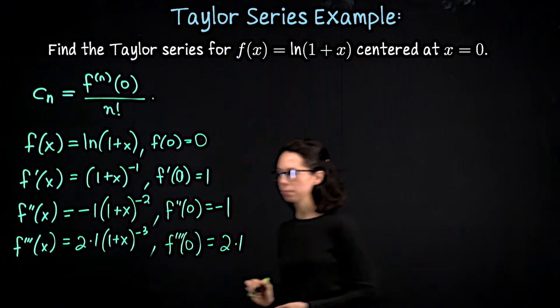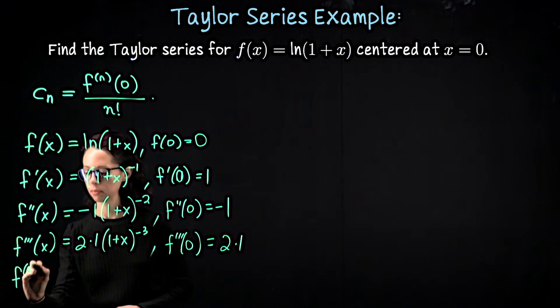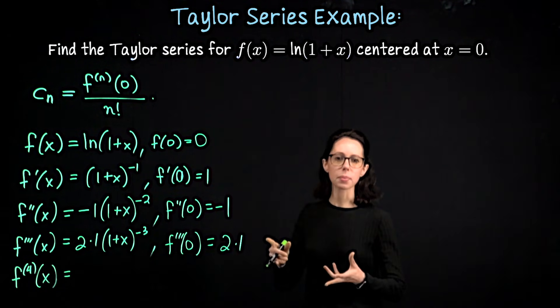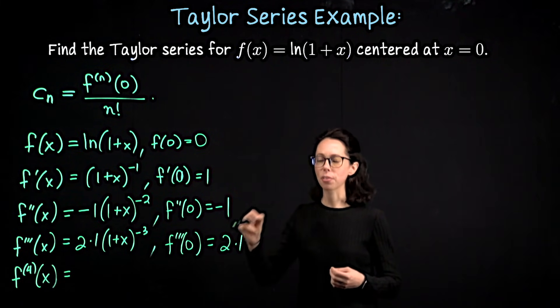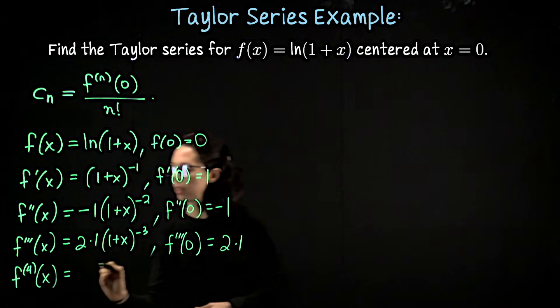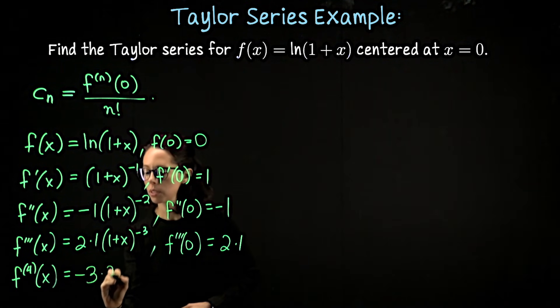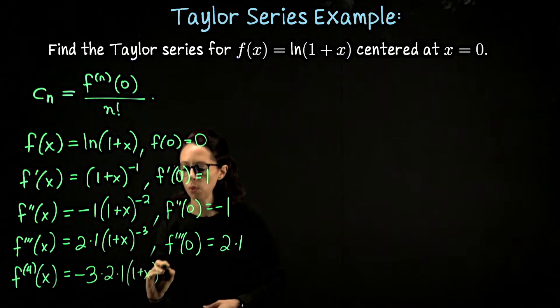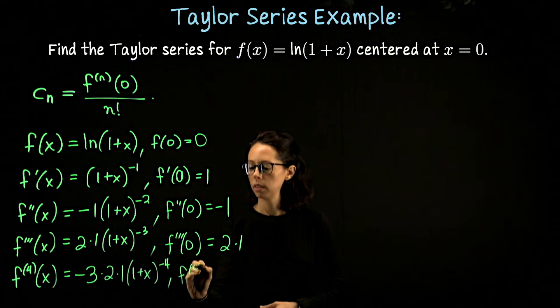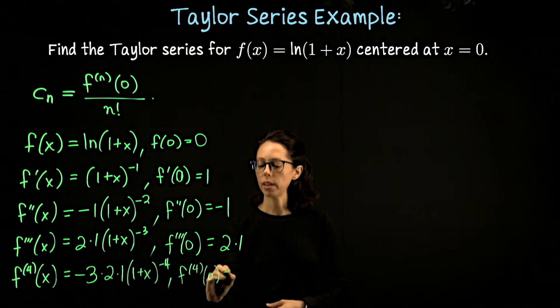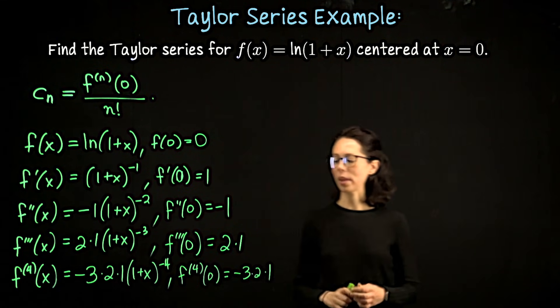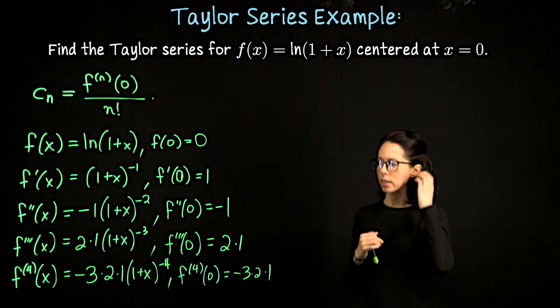Let's take the fourth derivative. The negative 3 will drop down, so we flip signs again. And now this coefficient in front is going to be negative 3 times 2 times 1. And at that point, I think it's clear what's happening with the power rule. So this is negative 3 times 2 times 1, (1 + x) to the negative 4, which means that when I plug in x equals 0, the fourth derivative of this function evaluated at 0 is negative 3 times 2 times 1. I think that's enough, but if you don't see it, you can always take another derivative or two.